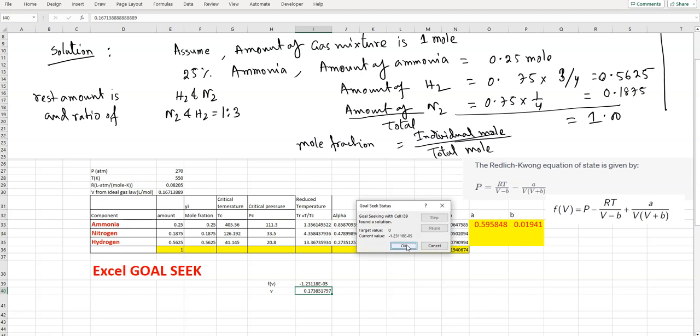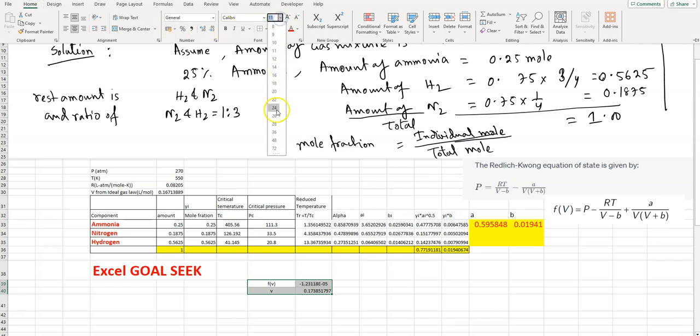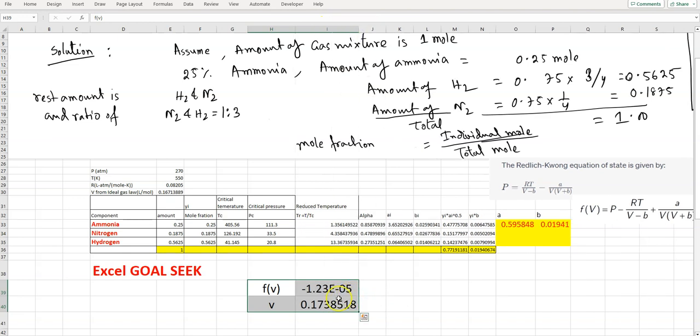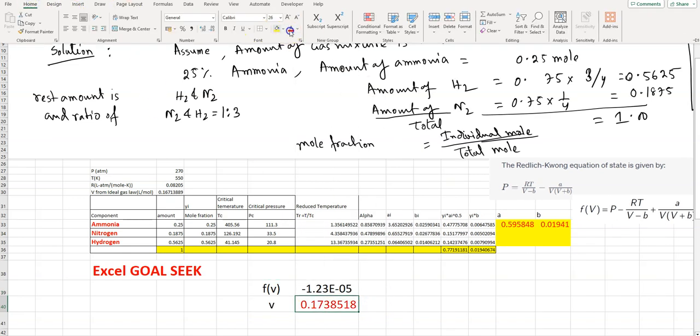Here's the result: V equals 0.17385178. The f(V) value is -1.23E-05, essentially 0. Our specific volume is 0.17385178. Using Goal Seek, when V is this value, f(V) equals 0 at this particular temperature and pressure. That is the answer.